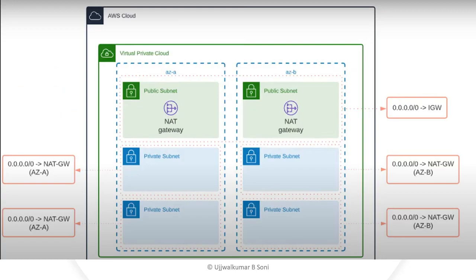This is the infrastructure we already have deployed on AWS Cloud. We have a VPC — Virtual Private Cloud — and in it we have two availability zones, 2a and 2b, wherein we have two public subnets, one in each availability zone, and two private subnets distributed across two availability zones.